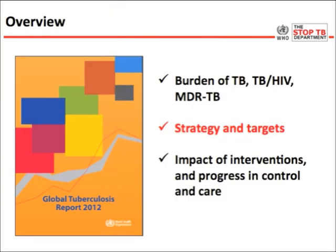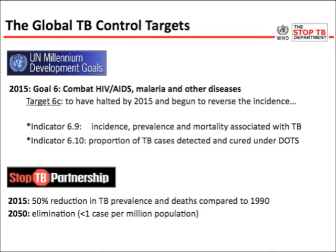Regarding the strategy and the targets: there are international control targets for tuberculosis that are part of the UN Millennium Development Goals — specifically to have halted by 2015 and begun to reverse the incidence. The incidence is already coming down, but very slowly at about 2% per year. The Stop TB Partnership established more ambitious targets to cut mortality and prevalence by 50% in 2015 compared to 1990, and there is a very ambitious target of elimination of tuberculosis from human society by 2050.